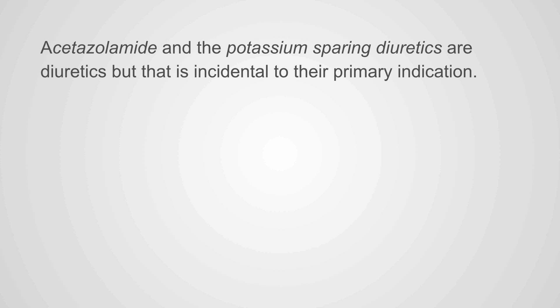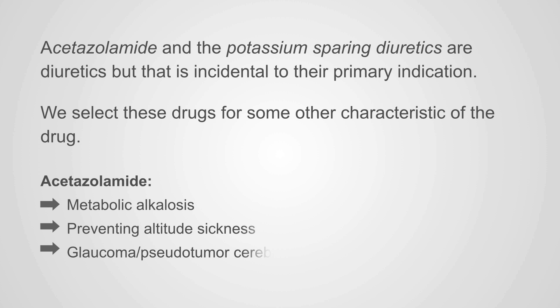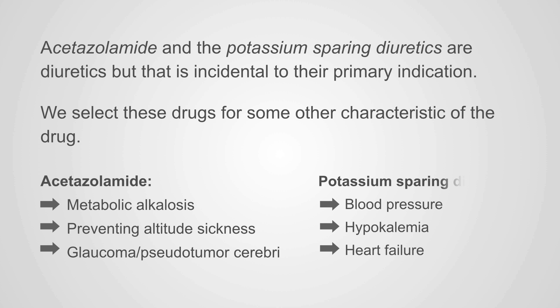Acetazolamide and potassium-sparing diuretics are diuretics, but that is incidental to their primary indication. We don't typically use these drugs for their diuretic effect. In the case of acetazolamide, we use it to treat metabolic alkalosis, prevent altitude sickness, and treat glaucoma and pseudotumor cerebri. In the case of the potassium-sparing diuretics, these are great blood pressure medications, useful in the prevention and treatment of hypokalemia, and great in the treatment of heart failure.